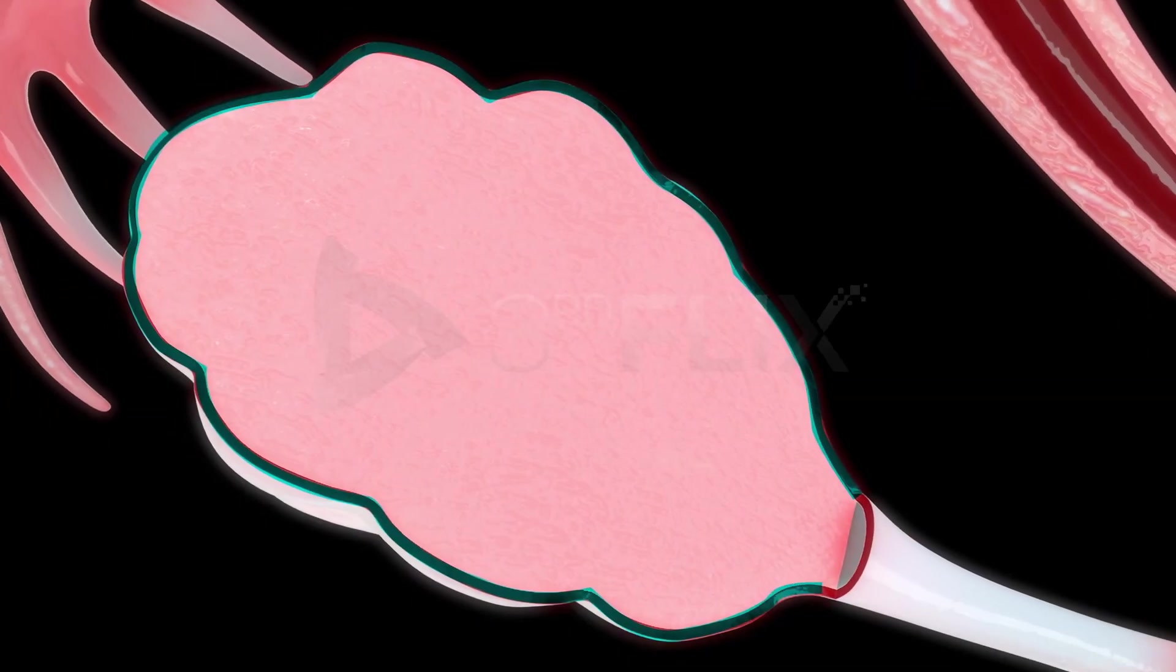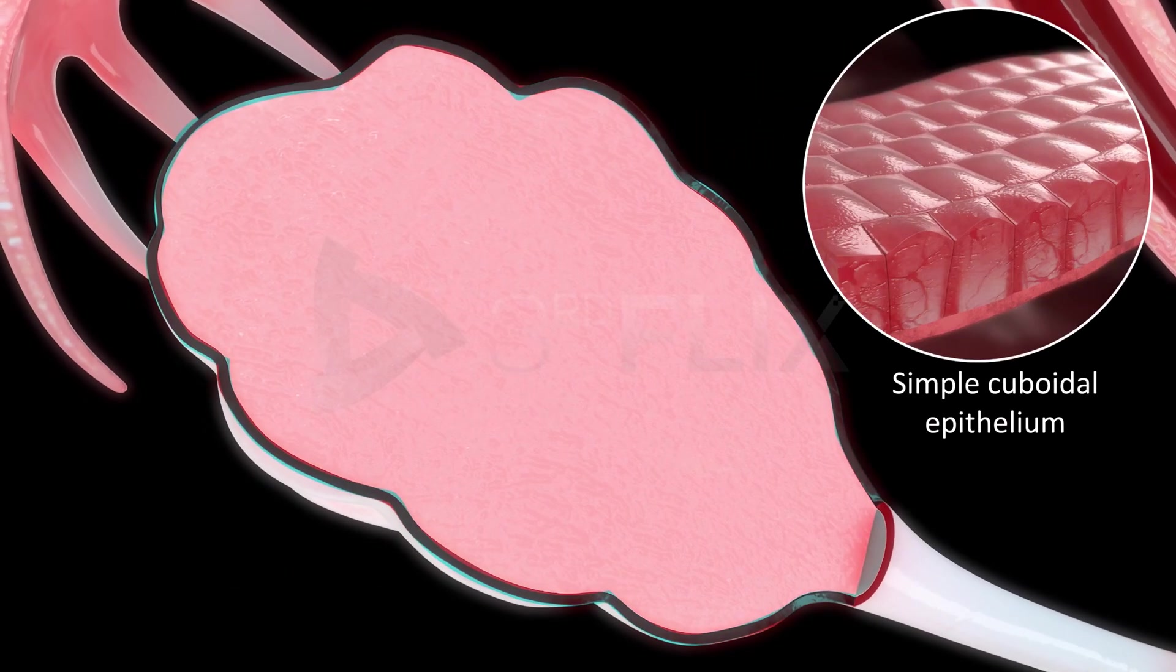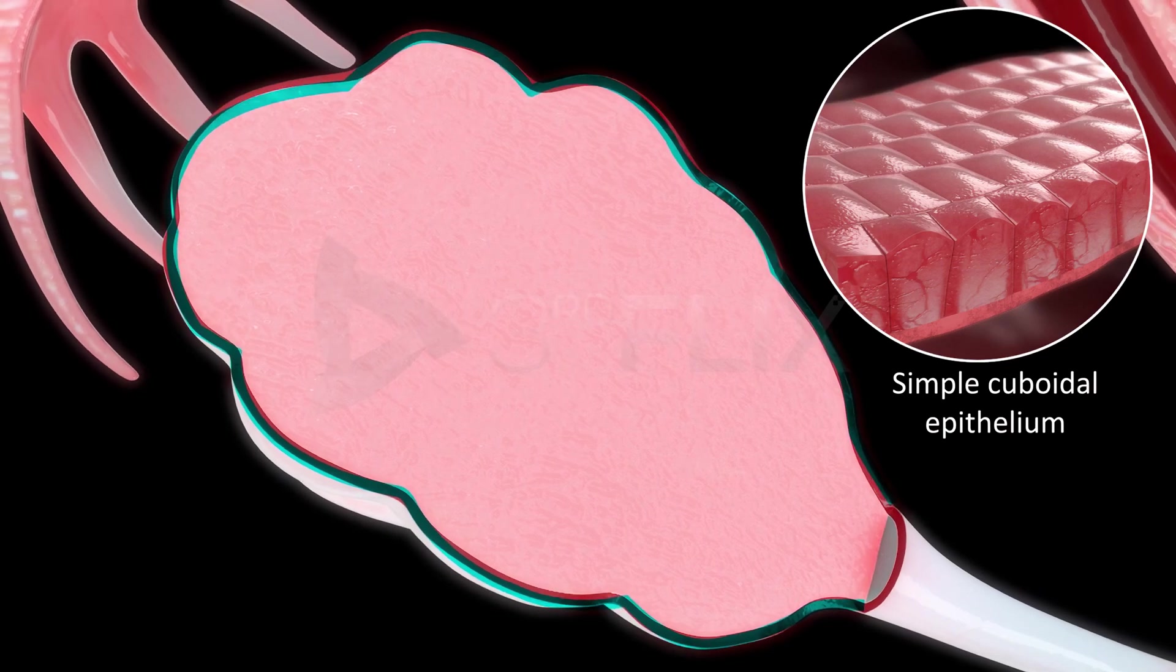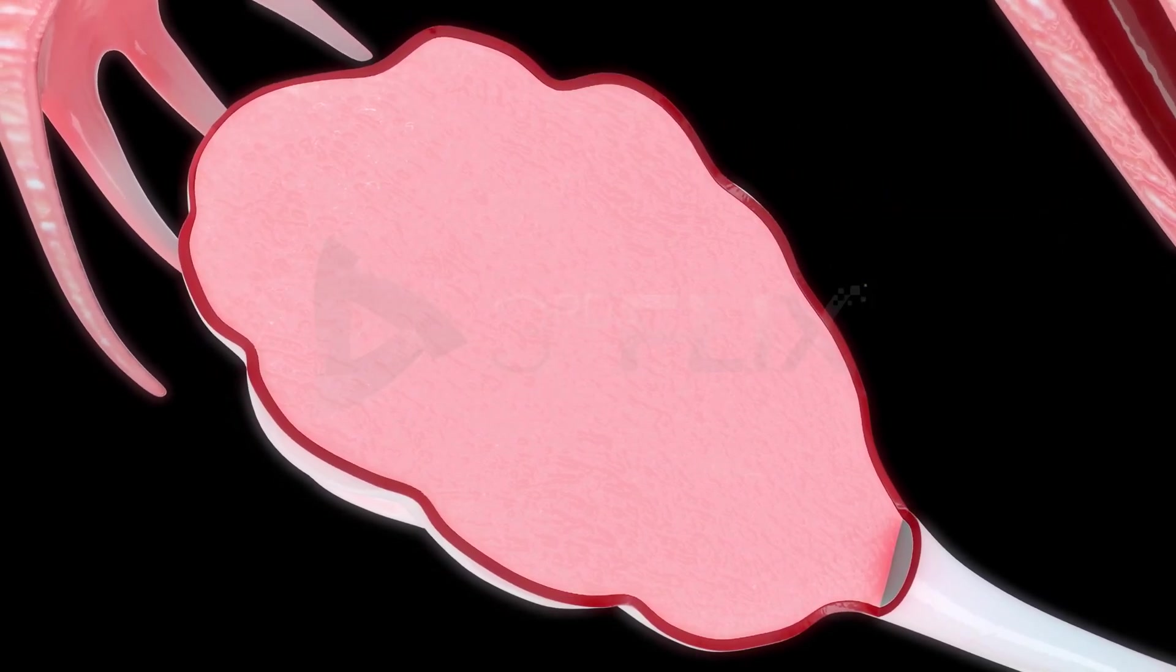The outer layer of the ovary consists of the germinal epithelium, a layer of simple cuboidal epithelium. The germinal epithelium produces ovarian follicles.